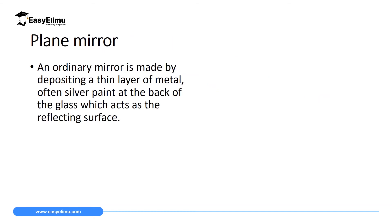Now that we have discussed the two main types of reflection — regular and irregular — it is important to note that the remaining part of this topic will focus mainly on regular reflection. Regular reflection is only produced when a parallel beam hits a reflecting surface that is smooth.